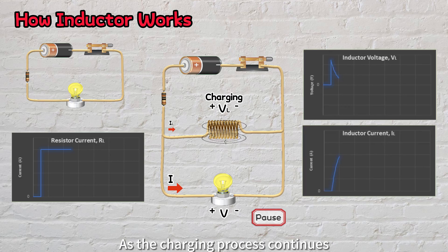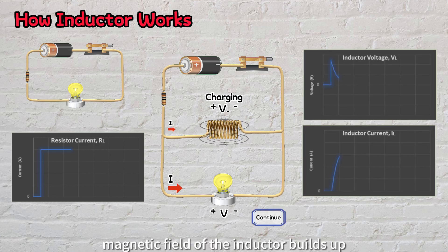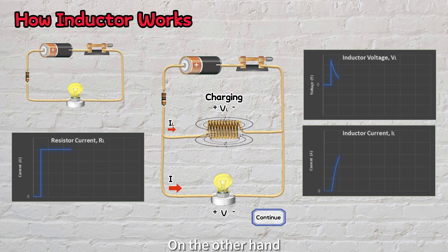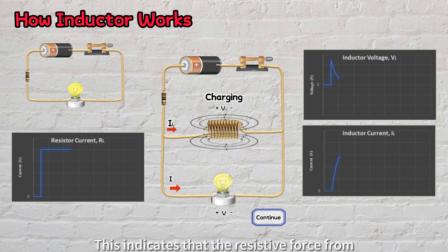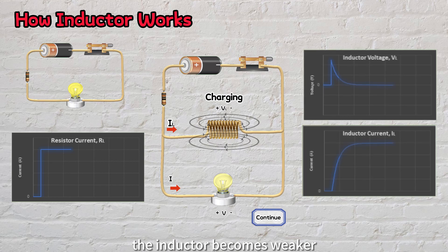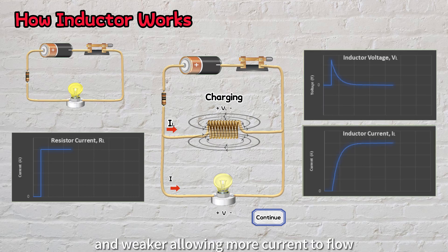As the charging process continues, the magnetic field of the inductor builds up and becomes stronger. On the other hand, the induced back-EMF and voltage across the inductor decreases over time. This indicates that the resistive force from the inductor becomes weaker and weaker, allowing more current to flow through the inductor easily.